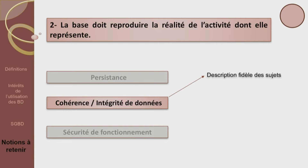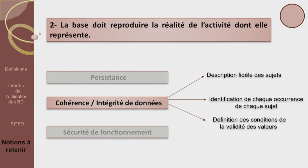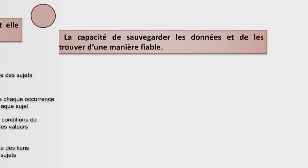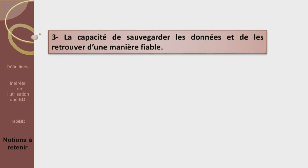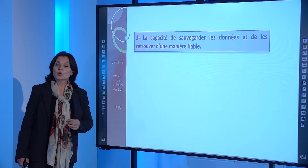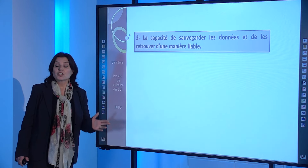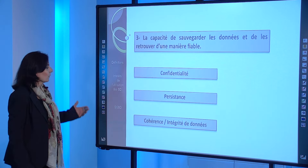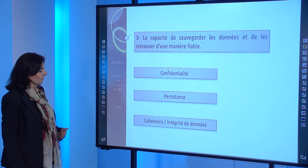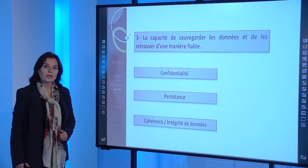La cohérence sera réalisée par la description fidèle des sujets, l'identification de chaque occurrence de chaque sujet, la définition des conditions permettant la validité des valeurs et la définition des relations entre les sujets. Troisième définition : la capacité de sauvegarder les données et de les retrouver d'une manière fiable, c'est-à-dire sans perte ou changement. Est-ce la confidentialité, la persistance ou bien la cohérence et l'intégrité ?